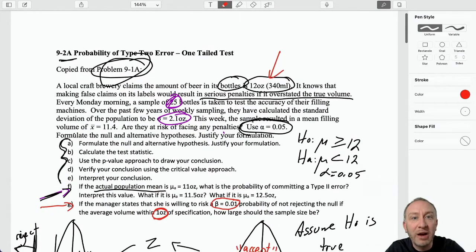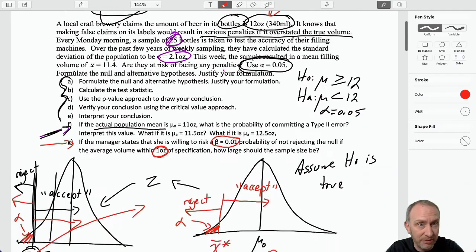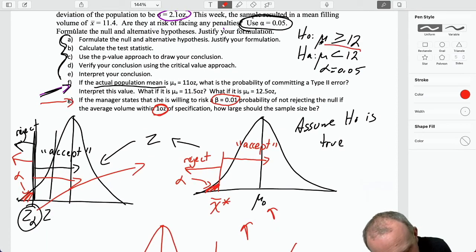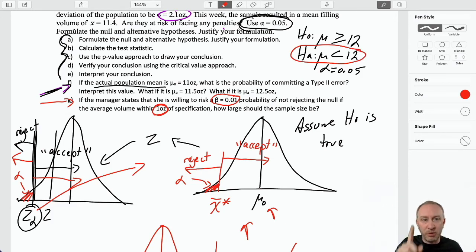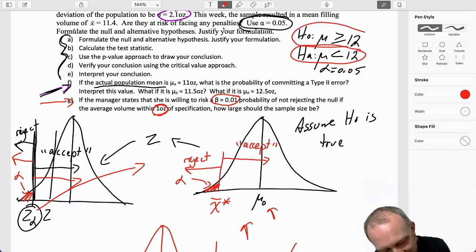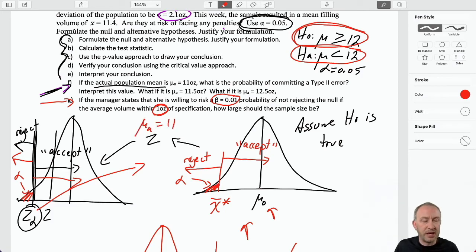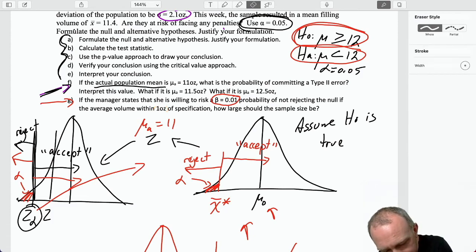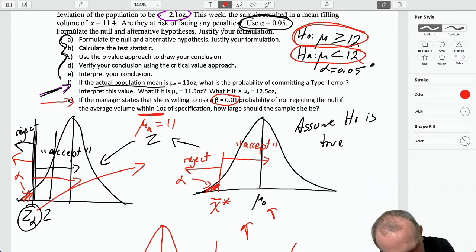So, 1 ounce from 12, so that would be 11 ounces. So, again, that's a number that satisfies the alternative hypothesis. She's willing to accept a 1% chance of believing the null, if the alternative is true, with a value of 11. And I'm choosing 11 again, because it's within 1 ounce of specification. And specification here is 12. So, 12 minus 1 is our 11.